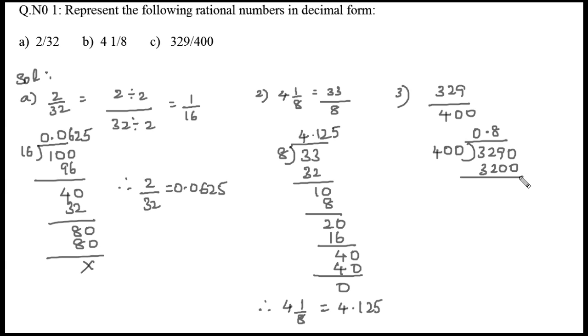8 times 400 is 3200 with remainder 90. Taking down 0 makes 900. 400 goes into 900 twice, giving 800 with remainder 100. Taking down 0 makes 1000. 400 goes into 1000 twice, giving 800 with remainder 200. Taking down 0 makes 2000. 400 goes into 2000 five times, so remainder is zero. Therefore, the decimal representation of 329/400 is 0.8225.